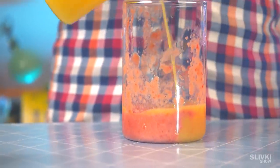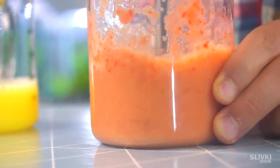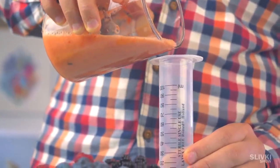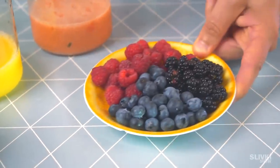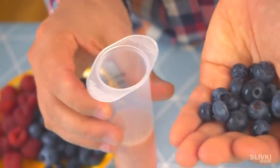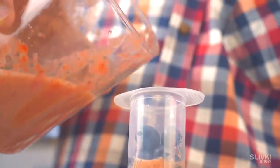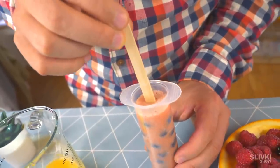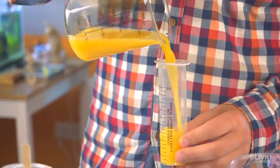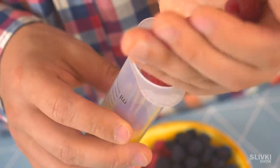We dilute the rest of the mass with orange juice and also pour the syringe. But this time we will add different berries for differentiation. Don't forget about the stick. That's how we made three pieces with the syringe.